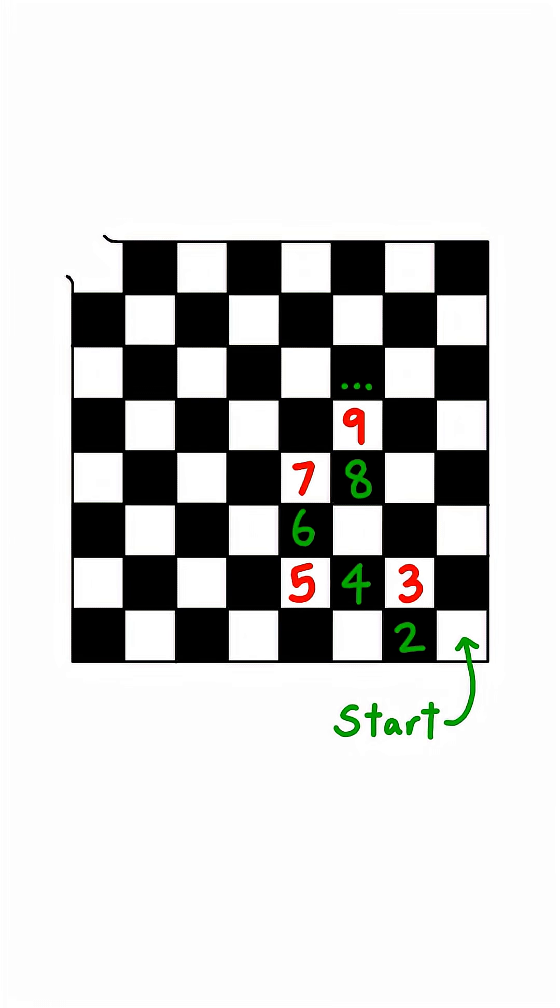Regardless of the path taken, odd-numbered squares are white, and even-numbered squares are black. This means the white escape square must be odd-numbered, but if we were to visit all 64 squares once, the last square, the escape, would be even-numbered instead. We have a contradiction, therefore we can't visit every square.